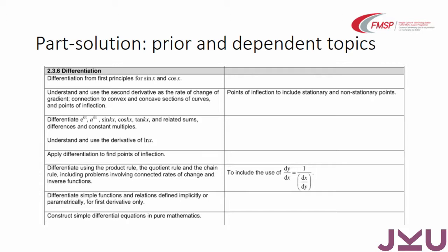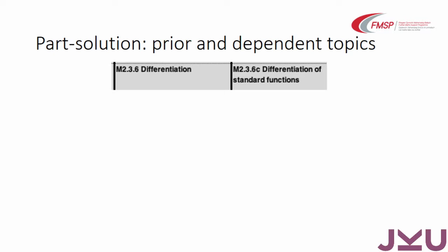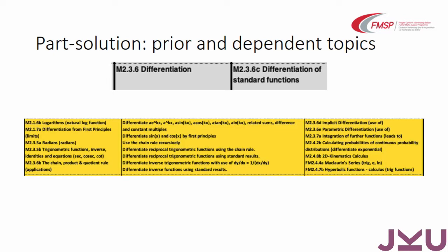So what we did when we wrote our scheme of work was, from the start, decide to look at prior independent topics for each part of the syllabus. This is just a picture from the exam board specification about differentiation. The person writing the materials for this topic decided to split it into six subsections or subtopics. And then if we look at one subtopic — differentiation of standard functions — we did a process of creating a spreadsheet where the learning objectives for that topic were identified in the middle, and in this column were prior knowledge required.